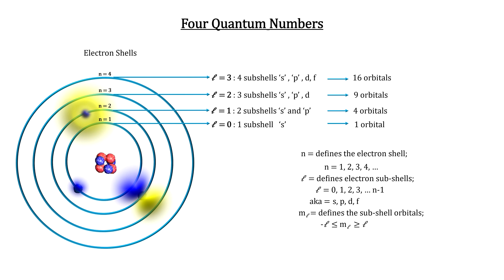For each quantized angular momentum sub-shell, the allowed orientations are quantized into orbitals and designated by the letters M sub L.